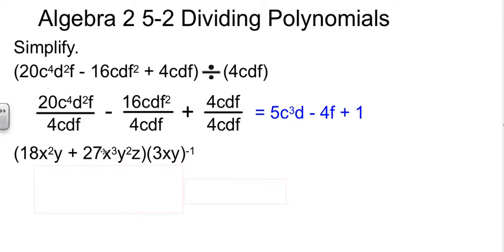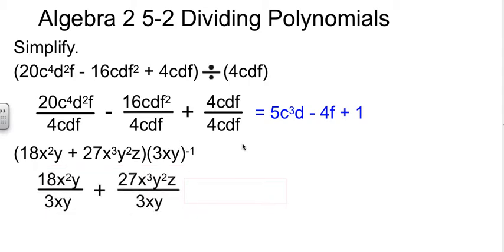Now this looks like a multiply problem, but it's really a divide problem because of the negative power attached to everything here. So we're going to treat this just like we did the first one — when you see that negative power around stuff, it goes to the bottom. We split it into two separate problems: 18X²Y over 3XY, and 27X³Y²Z over 3XY. Simplify each term separately, and you end up with 6X plus 9X²YZ.